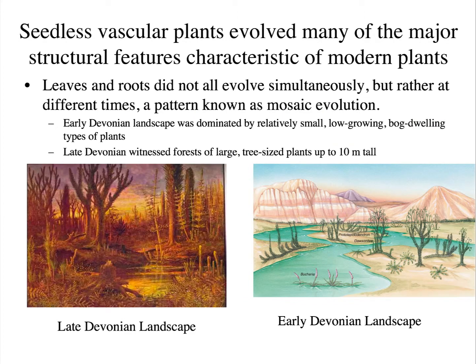Seedless Vascular plants evolved many of their major structural features characteristic of modern plants. However, leaves, roots, and other secondary features didn't evolve at the same time — the textbook describes this as mosaic evolution, meaning different features evolved at different times.